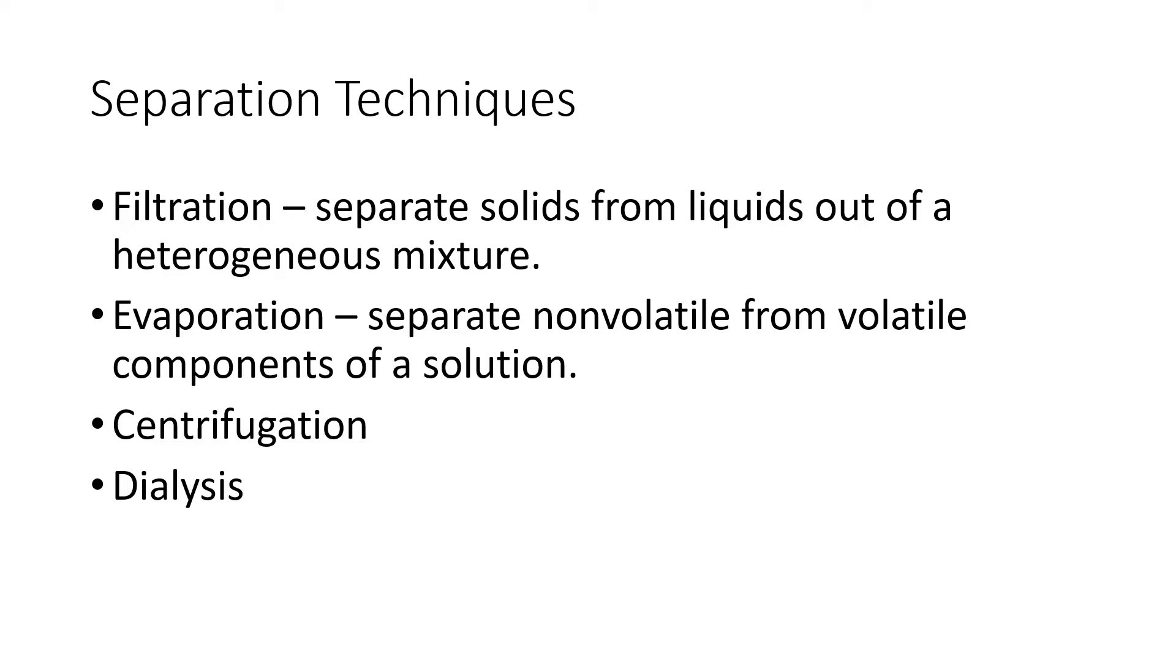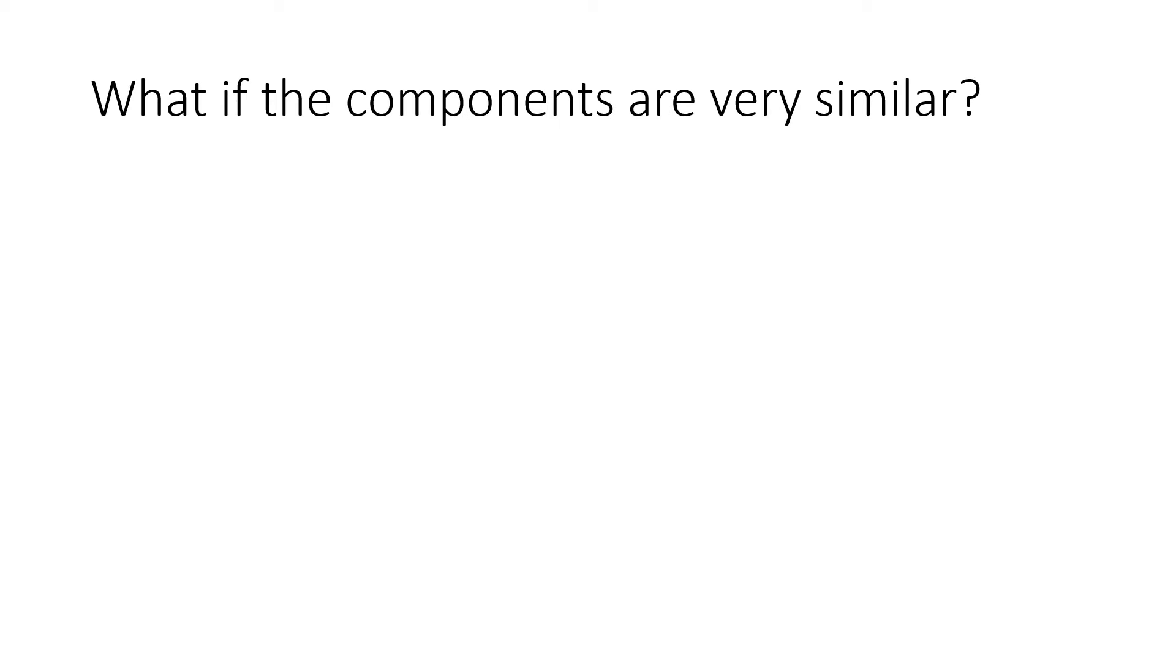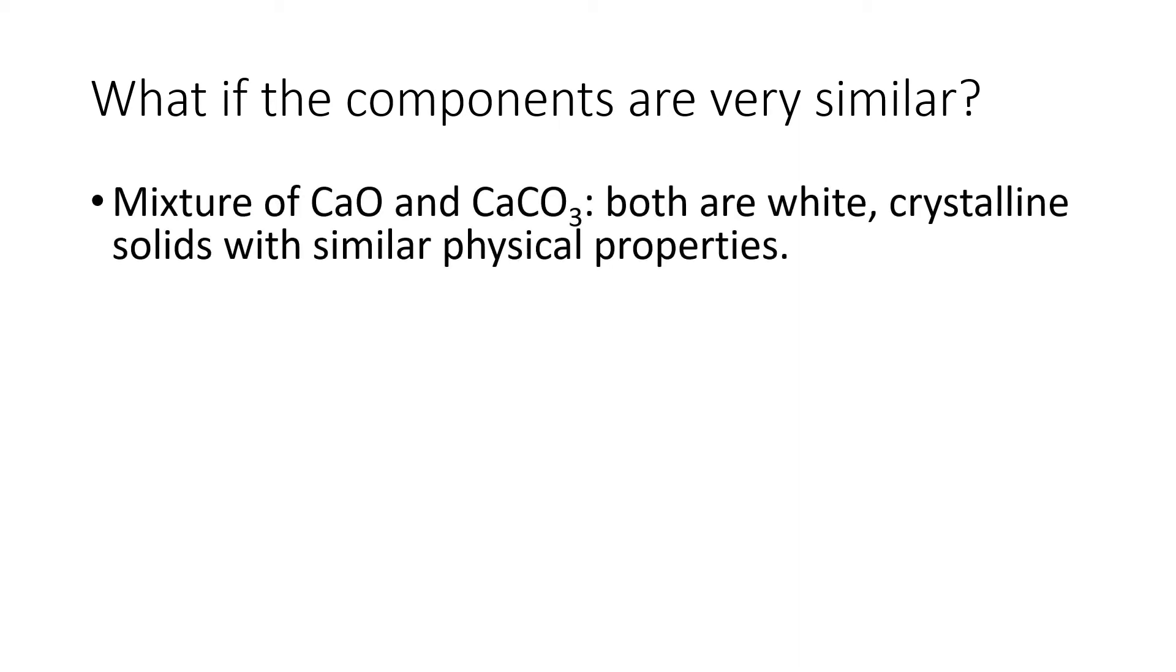Now, what if the components of the mixture are very similar? For example, what we're going to be analyzing is a mixture of calcium oxide and calcium carbonate. Both of these are white crystalline solids with similar physical properties. You could look at a mixture of salt and pepper and, although it would be very hard to do, you could still go in with a pair of very small pliers and separate out the grains because they're very different. But in this case, the two components are very similar. You cannot separate them through physical methods, so we're going to have to resort to a chemical method.